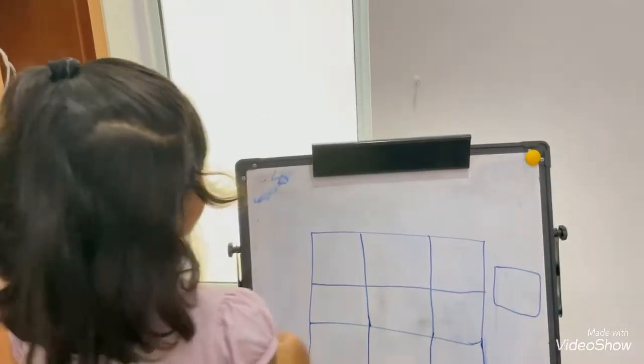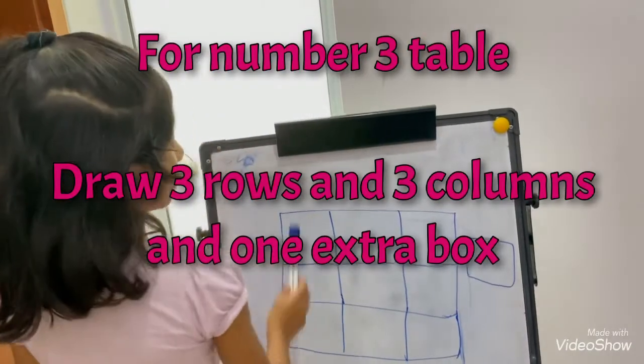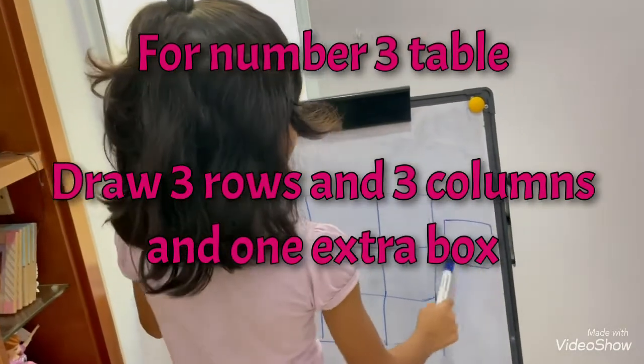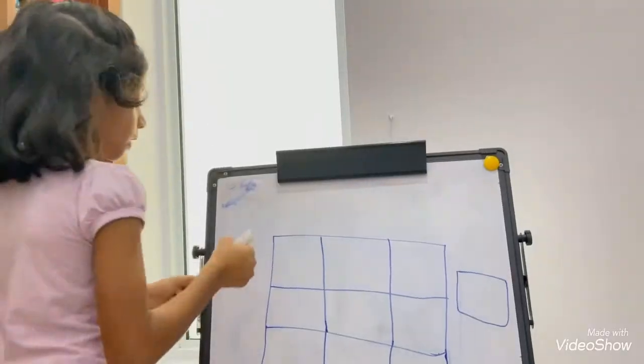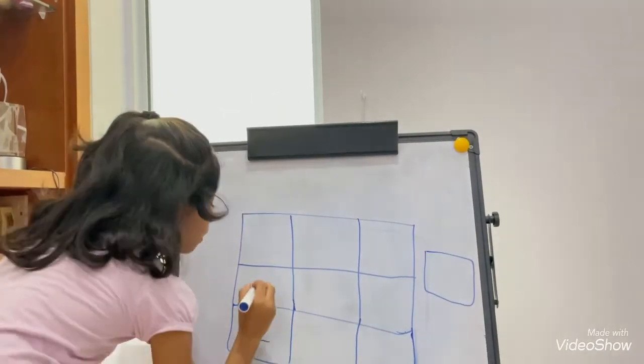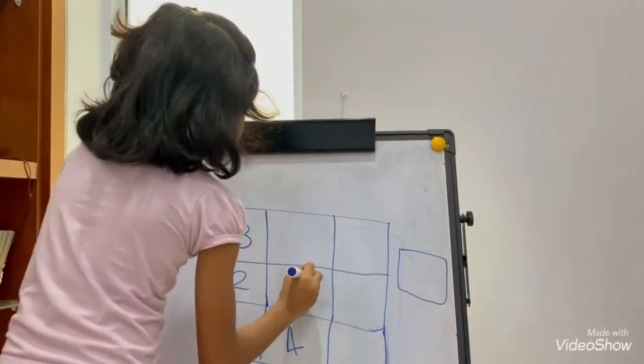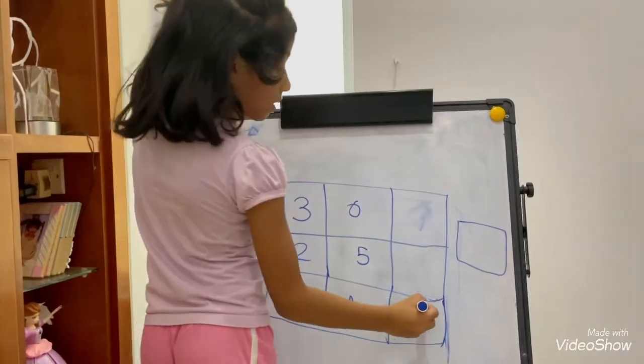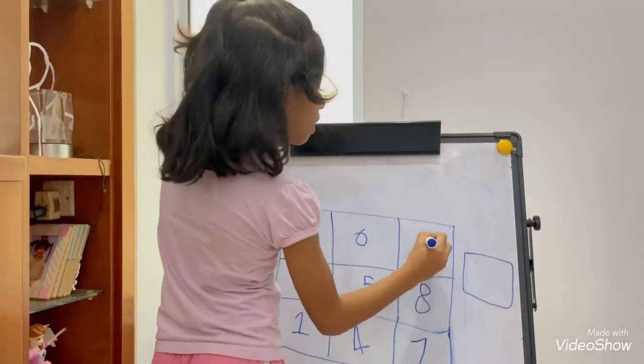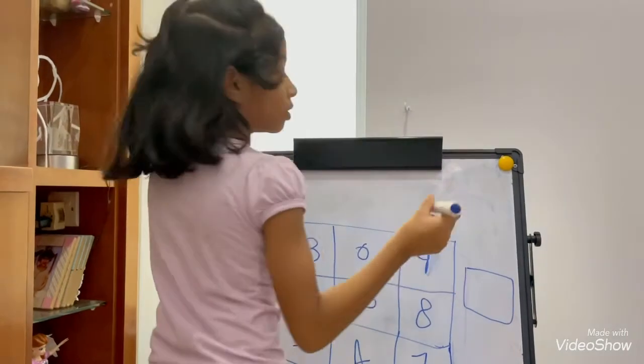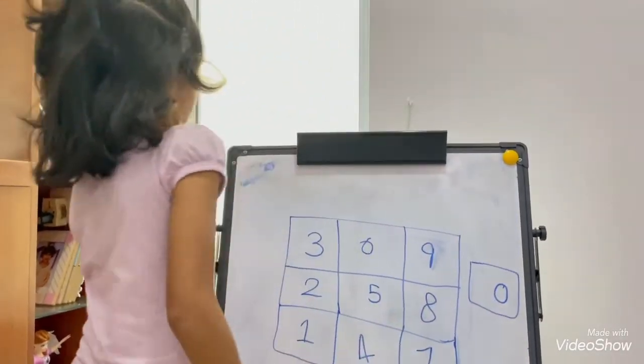For 3 tables, you have to write a big box like this and you have to write 1 extra box here. First you have to write 1, 2, 3, 4, 5, 7, 8, 9 and with the extra box you have to draw 0.